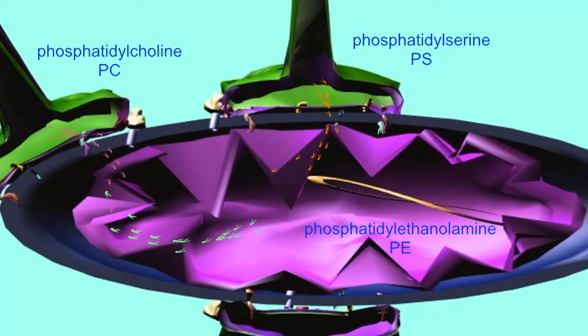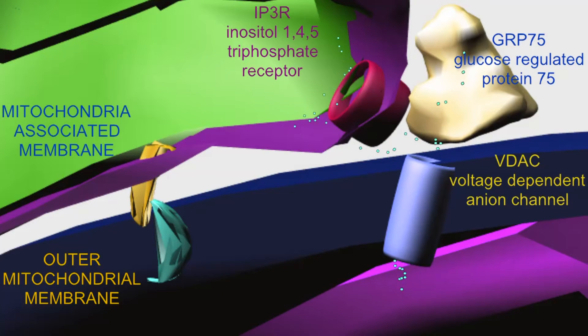For example, phosphatidylserine is synthesized in the endoplasmic reticulum, transported to the mitochondria where it is converted into phosphatidylethanolamine, which is then transported back to the mitochondria-associated membranes where it is metabolized into phosphatidylcholine, which is then transported back to the mitochondria. Many of the proteins located at the mitochondria-associated membranes function in lipid metabolism.